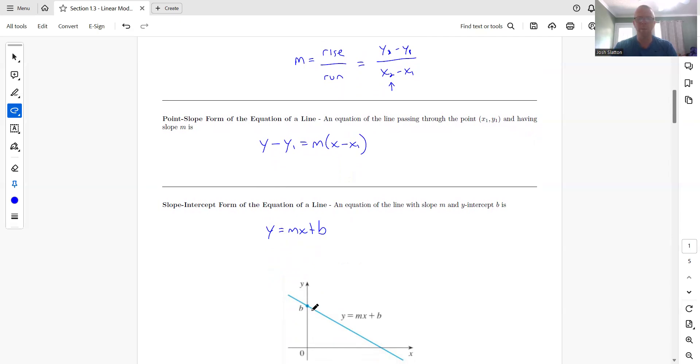Or if it's a fraction, go down whatever the bottom number is, go over whatever the – sorry, I did that backwards. Go down whatever the top number is, go over whatever the bottom number is.